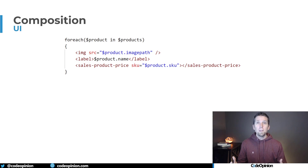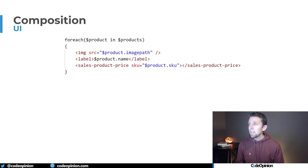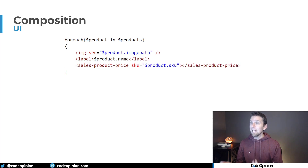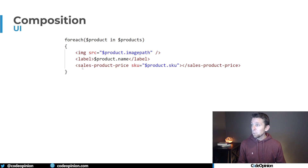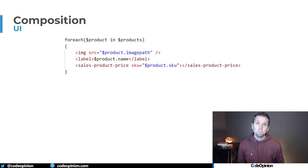To illustrate in pseudocode: the component doing our product listing fetches all the products from the catalog service and iterates over them. It has the image path and the name, but then we're using that sales product price component, passing the SKU, and it has to do an HTTP call to get the price.